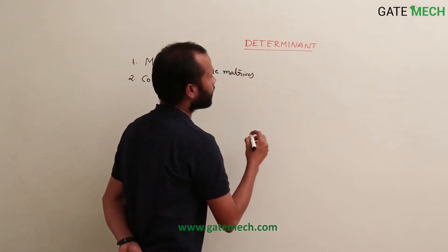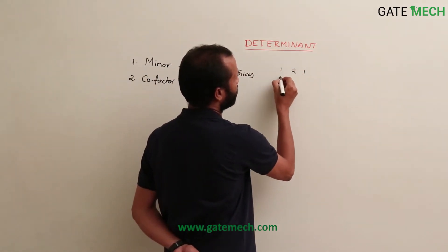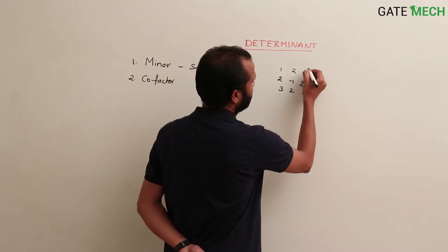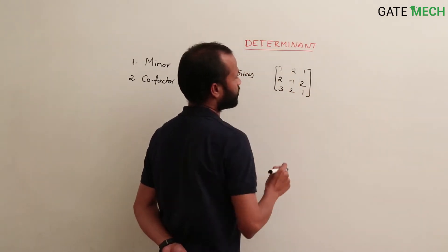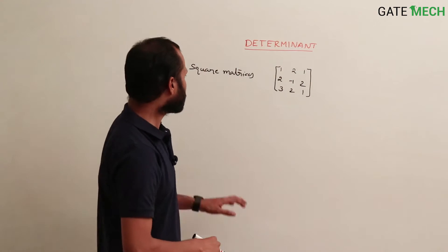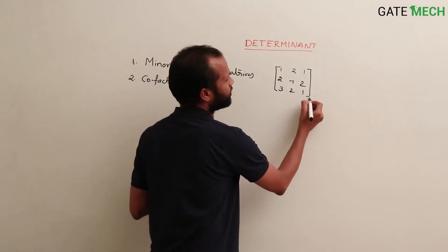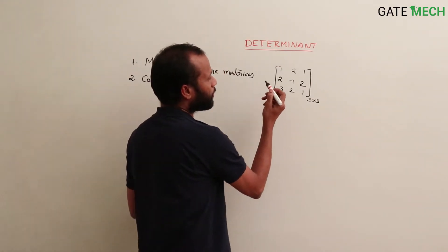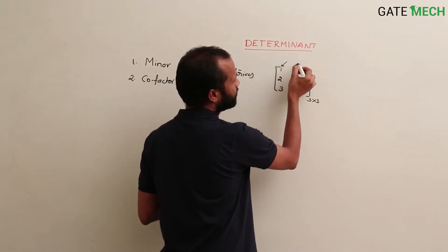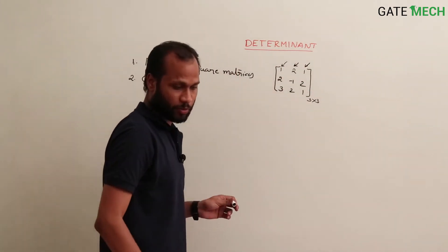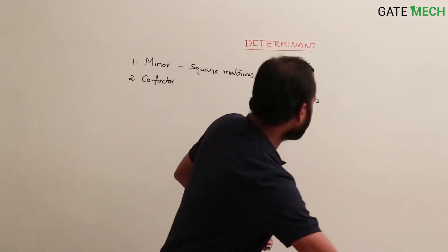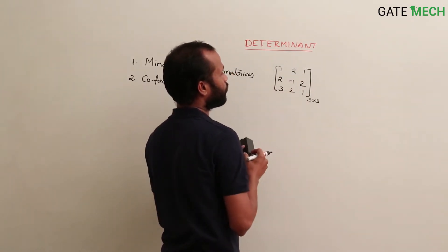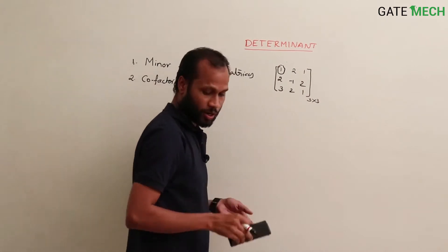For example, suppose this is my matrix: 1, 2, 1 / 2, -1, 2 / 3, 2, 1. The minor is defined for elements of a square matrix. This is a square matrix of size 3x3, so minor can be defined for each element of this matrix. For example, the minor of the first element 1 at position (1,1).